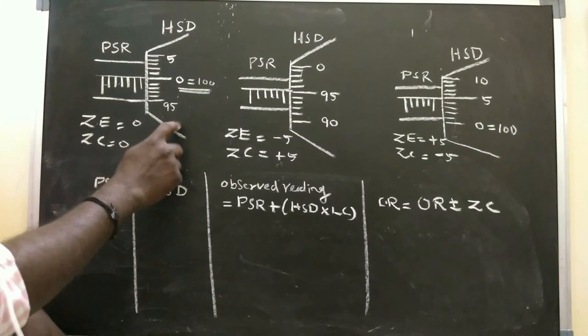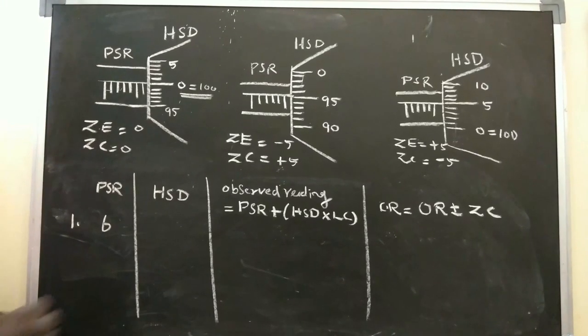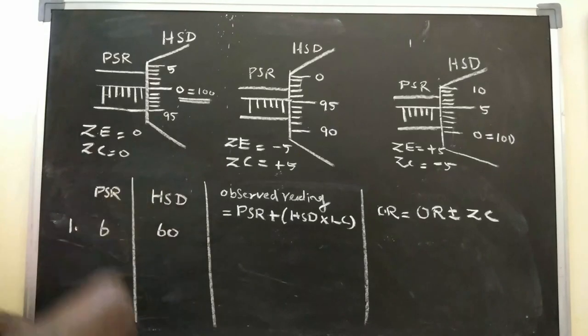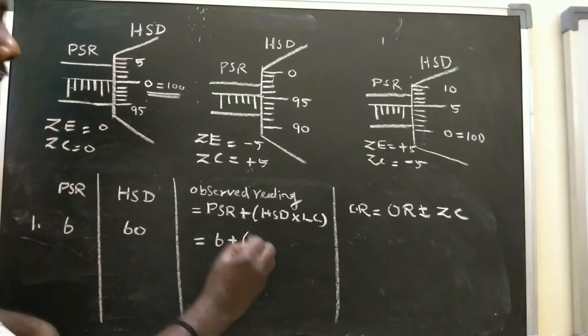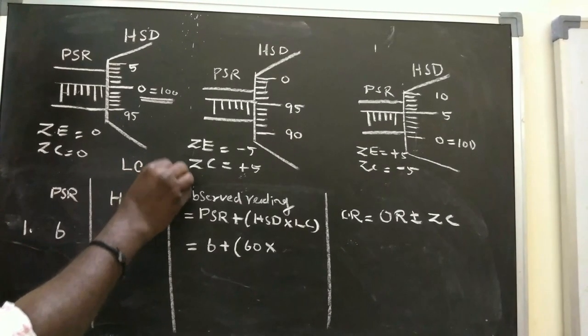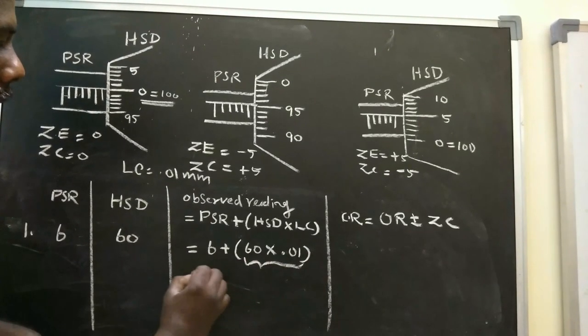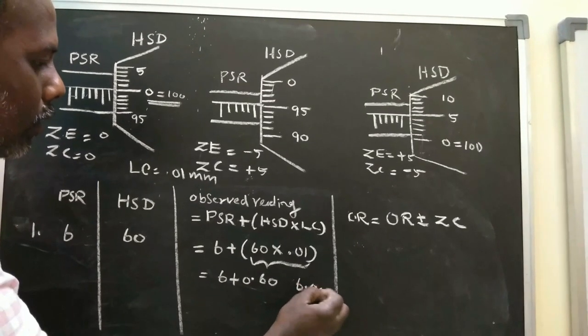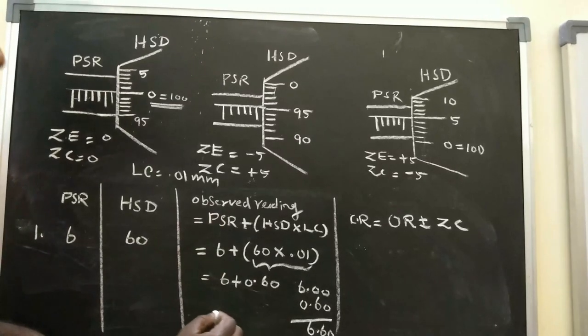For the first reading, the PSR is 5 or 6. Let's say PSR is 6 and HSD is 60. Using the least count of 0.01mm, the calculation is 6 plus 60 times 0.01, which equals 6 plus 0.60, giving us an observed reading of 6.60.